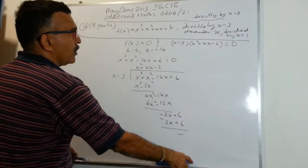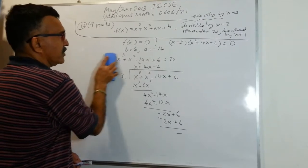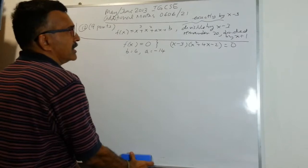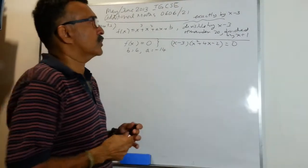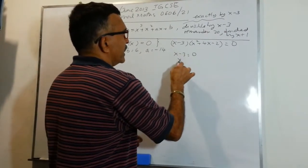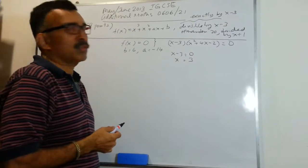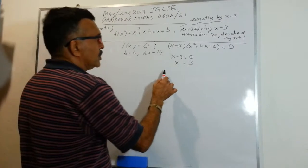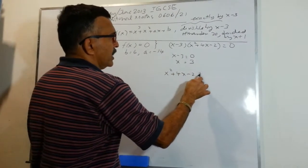So now we can go ahead and solve the equations. x minus 3 times x squared plus 4x minus 2 equals to 0, which means x minus 3 equals to 0, so x equals to 3. We don't need this, because they want us to find the non-integer roots, so we don't need this.